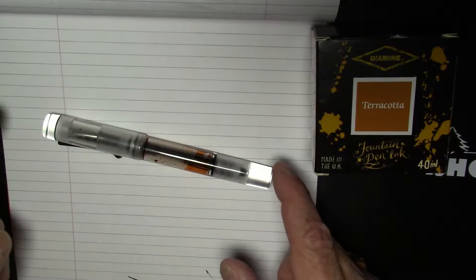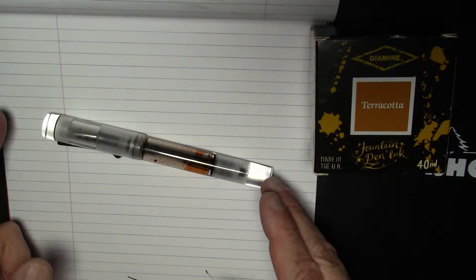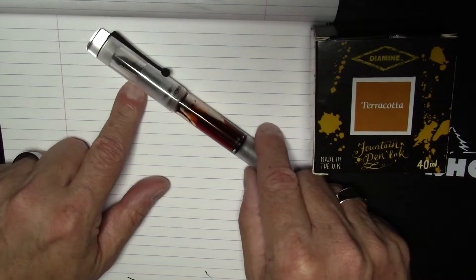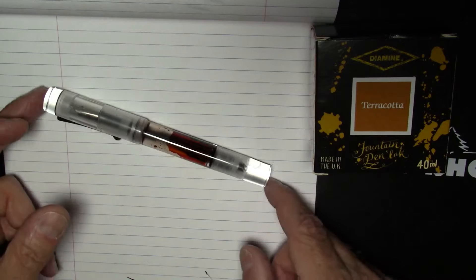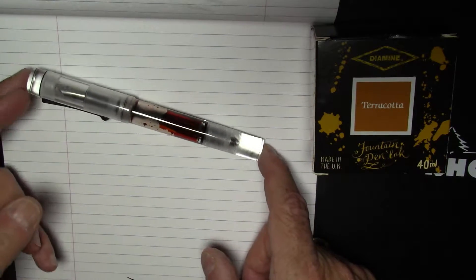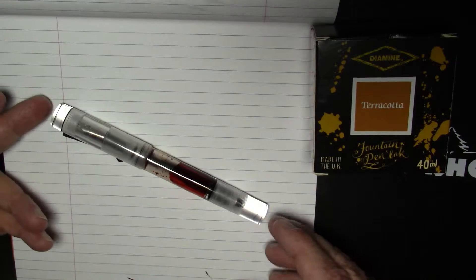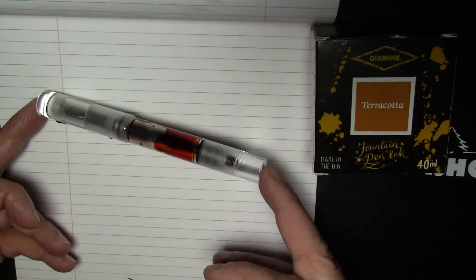Greetings. This pen is the Opus 88 Coloro demonstrator. This is a Taiwanese made pen that's acrylic and it has some black trim, but it's pretty much mostly a clear demonstrator pen.